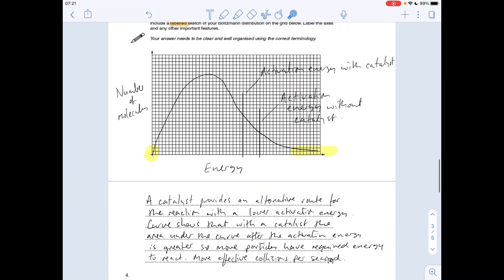In words, I'm saying something like this: the catalyst provides an alternative route for the reaction with the lower activation energy—so I'm getting the definition of a catalyst in there. The curve shows that with the catalyst, the area under the curve after the activation energy—with the catalyst, the area under the curve with the activation energy or higher—is greater than the area under the curve without the catalyst. What that's telling us is there's more particles with sufficient energy to react with the catalyst because of that bigger area compared to without the catalyst.